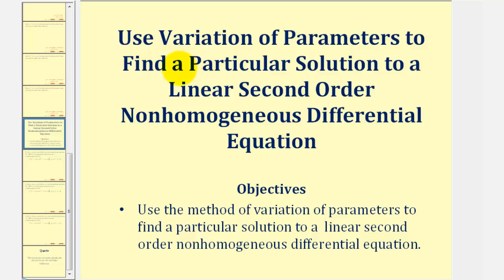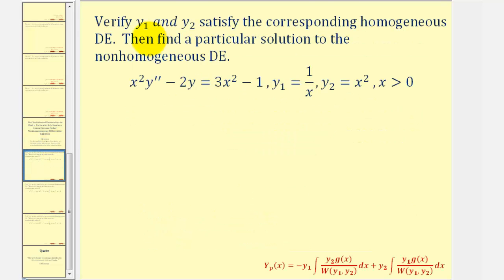Welcome to an example in which we'll use the variation of parameters method to find a particular solution to a linear second order non-homogeneous differential equation. We're first asked to verify that y₁ and y₂ satisfy the corresponding homogeneous differential equation, and then find a particular solution to the non-homogeneous differential equation.